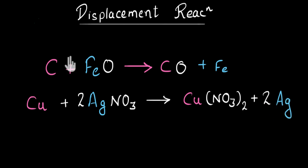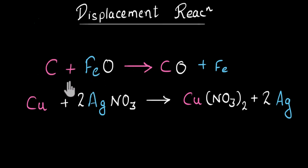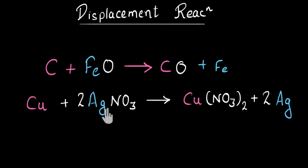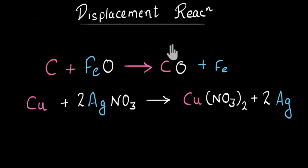These examples are of displacement reactions. In all of them, one highly reactive element is displacing a less reactive element from its compound. Copper is more reactive and displaces silver from its compound. Finally, we get these pure elements and we can use them. Displacement reactions can be very helpful in many cases.